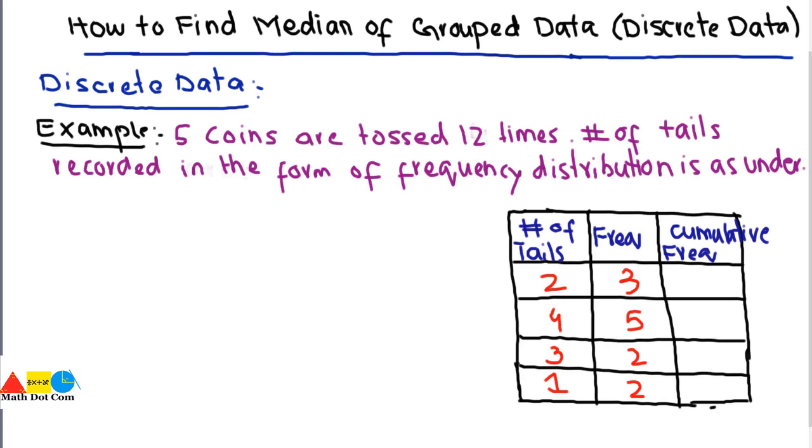Let's see the step-by-step method for how you can find the median of such data in which you come across discrete data, or a limited number of observations.